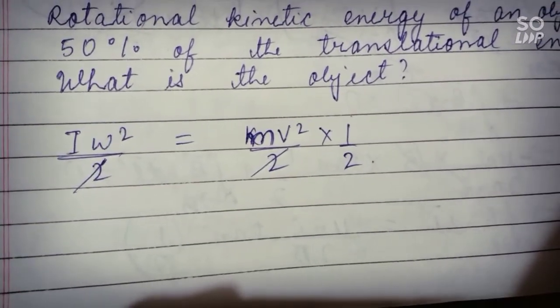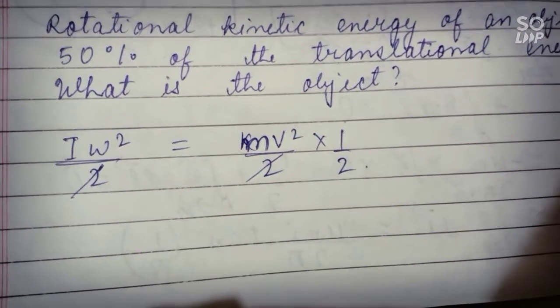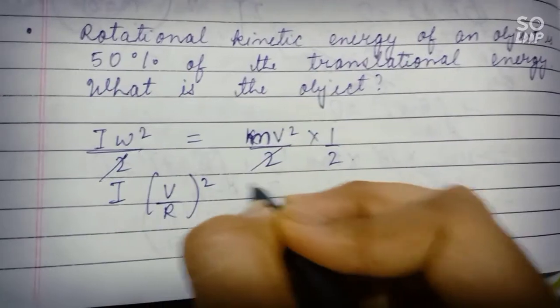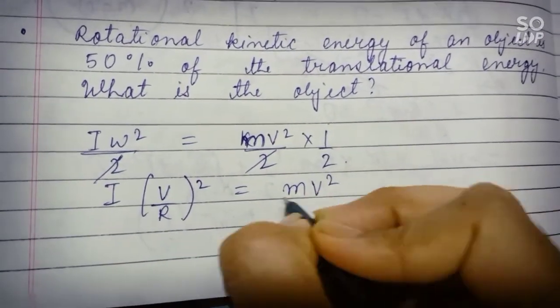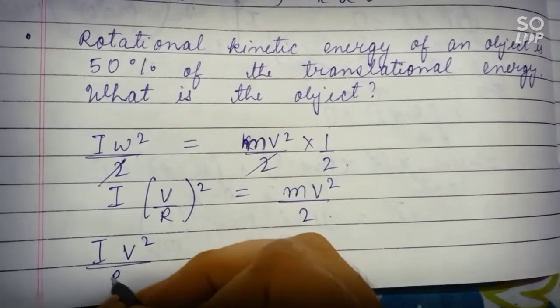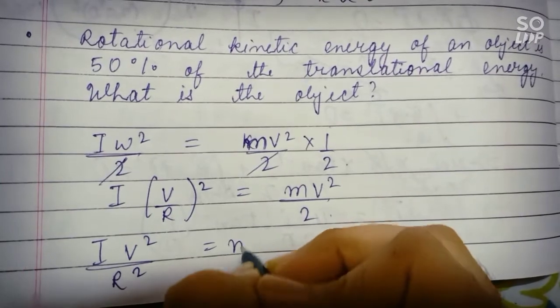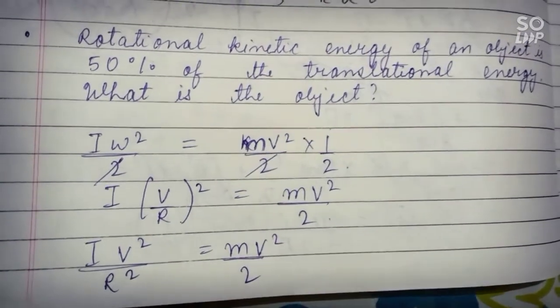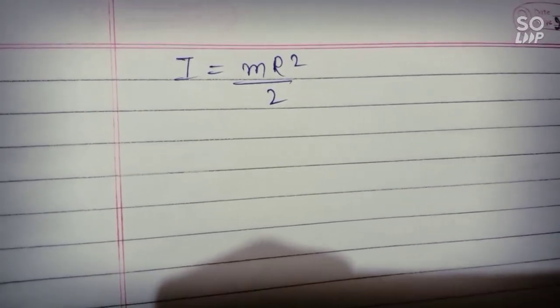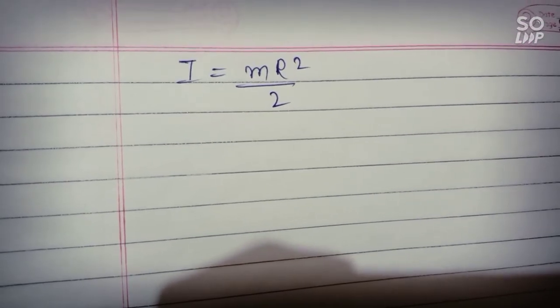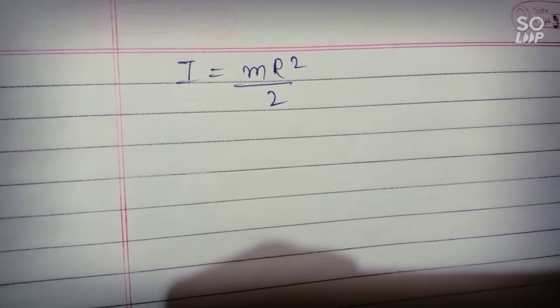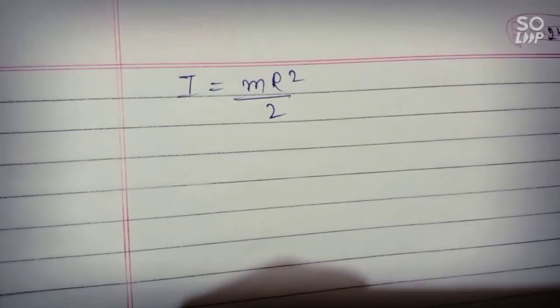Now we'll replace omega by V divided by R. So on solving this we get I equal to mR square by 2. And we know that mR square by 2 is the moment of inertia for disc or we can say solid cylinder.